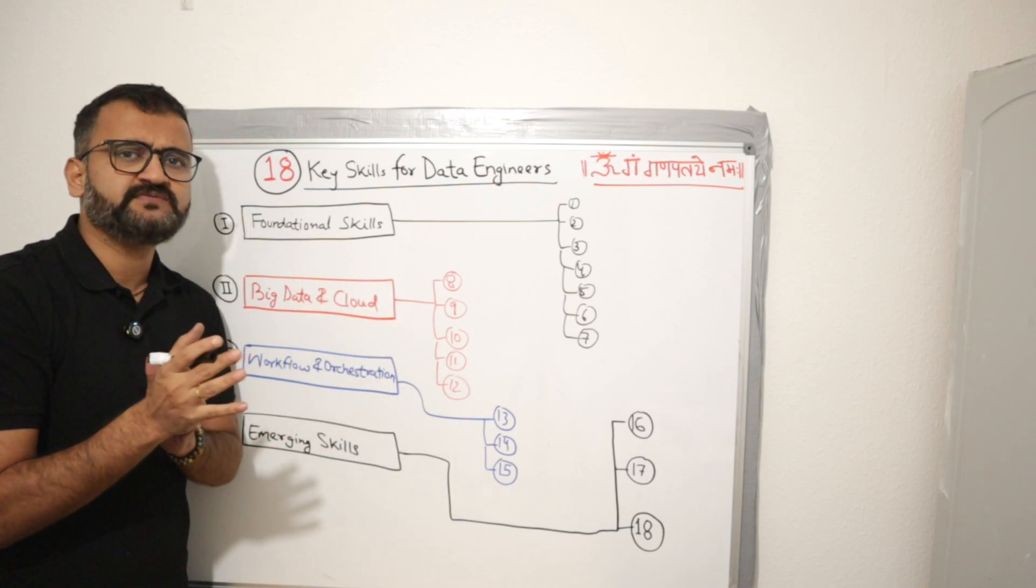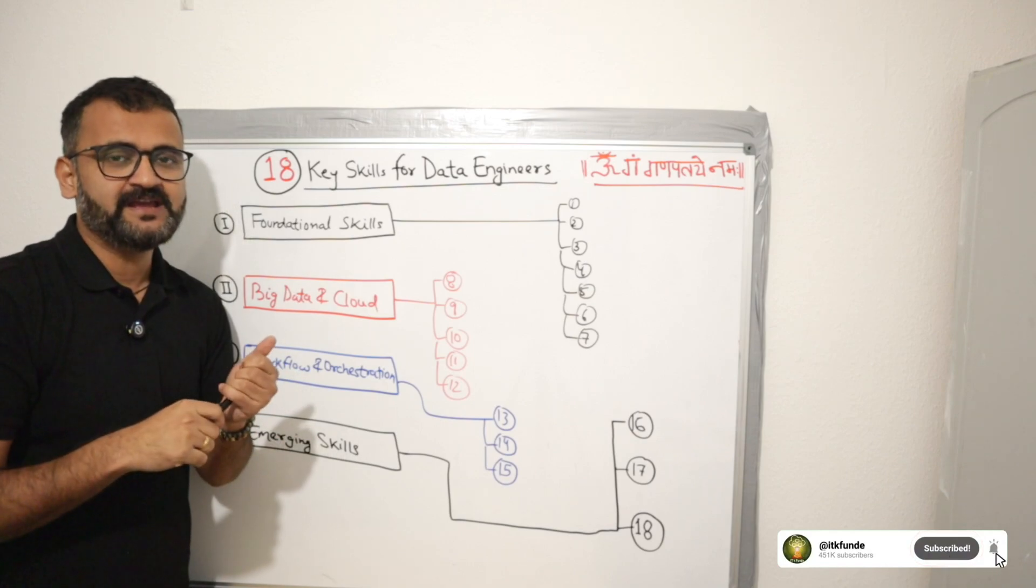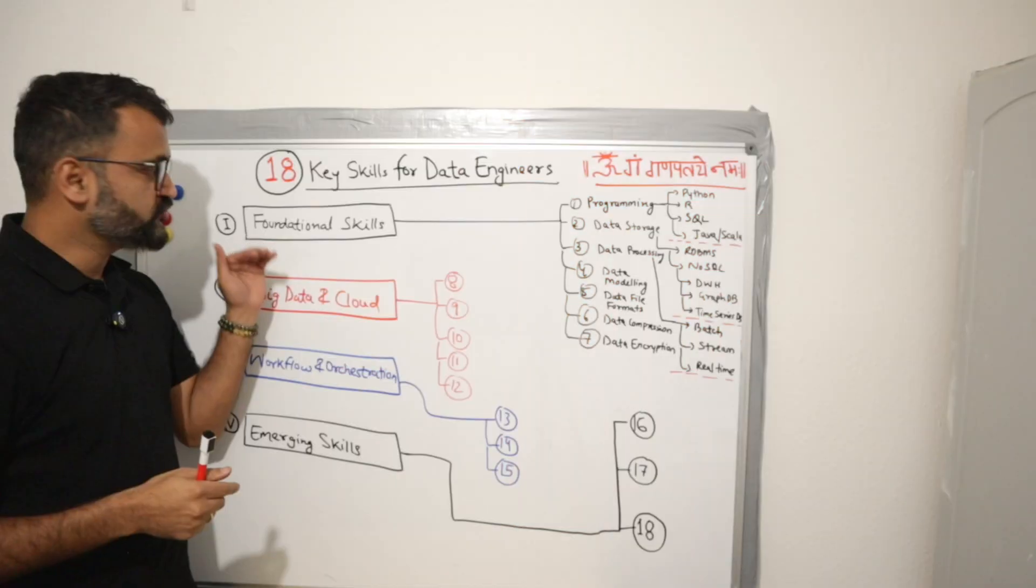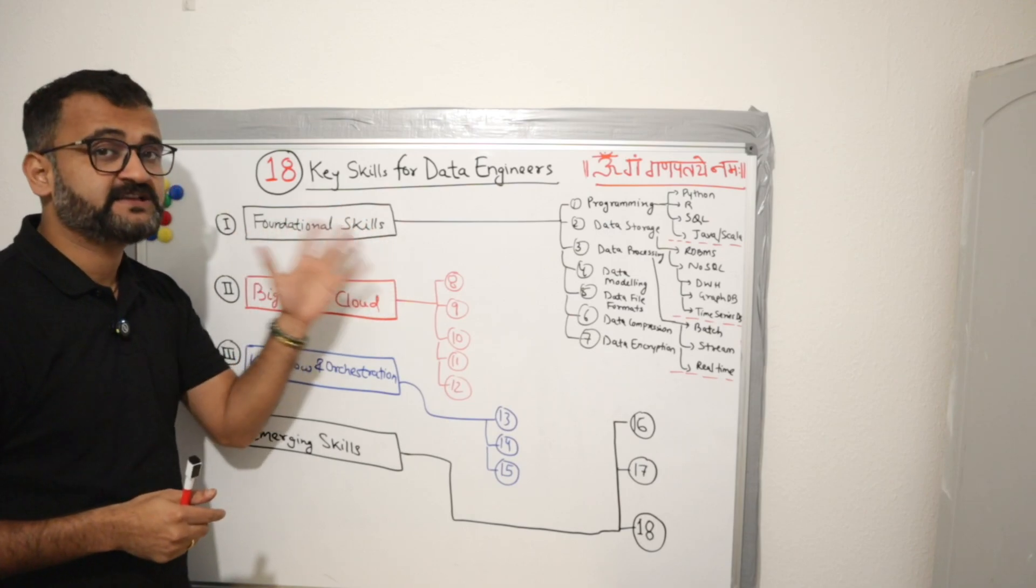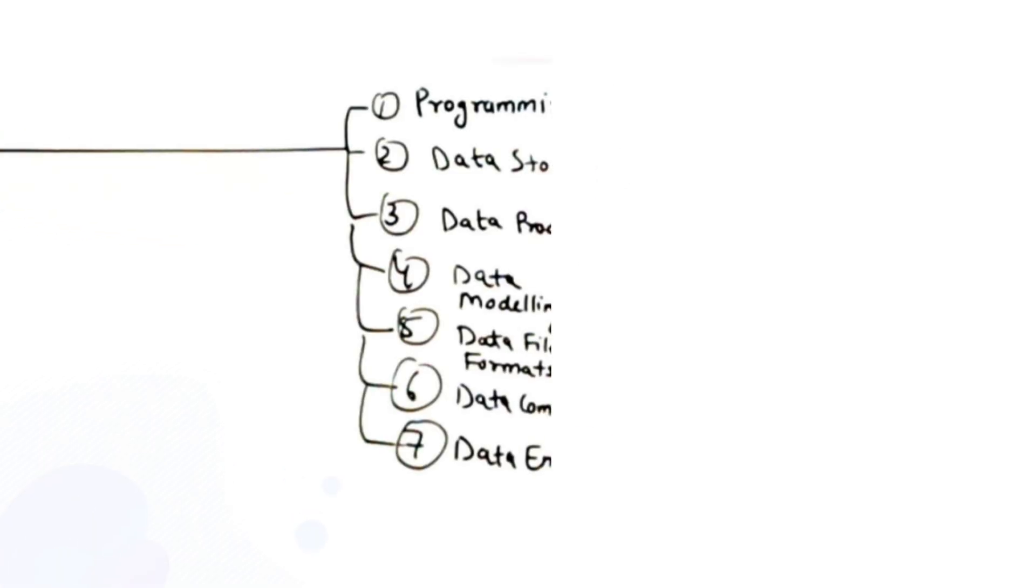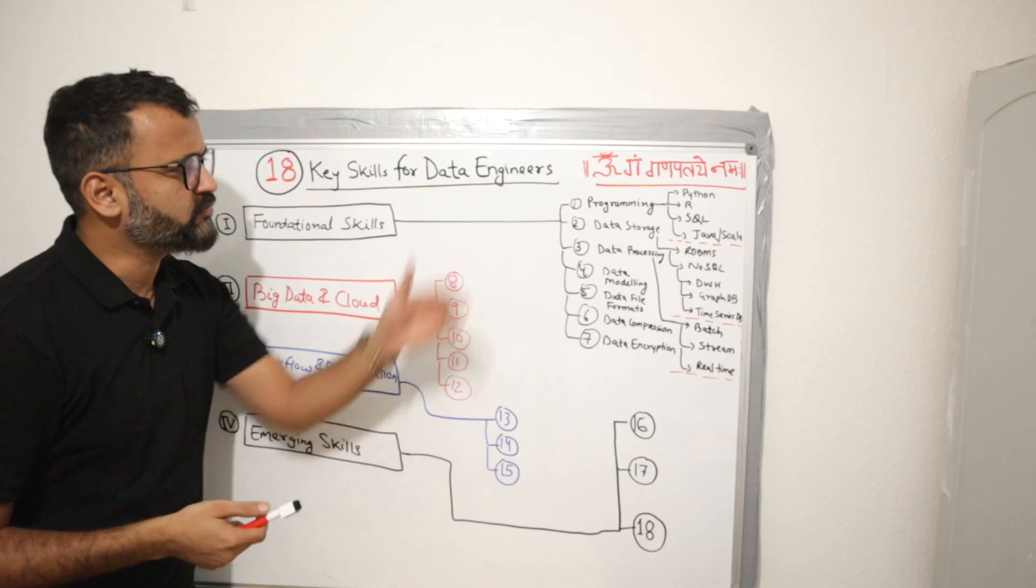So let's understand these 18 skills. And I am pretty sure by the end of this video, you will have a very clear understanding of where you stand in your data engineering career. So let's get started. Let's begin with the foundational skills you need to become a successful data engineer. We have seven different sections, and I will try to touch base on some toolings around these seven.